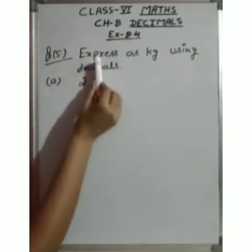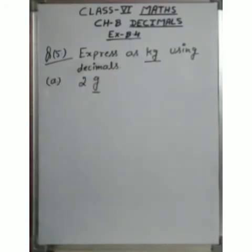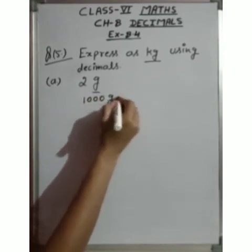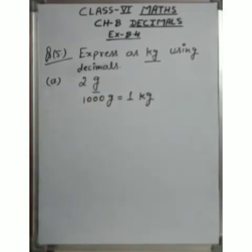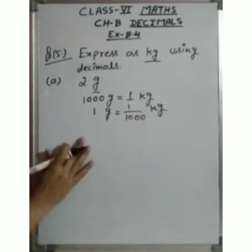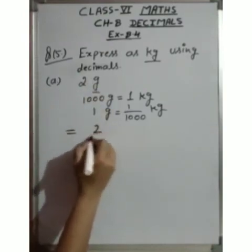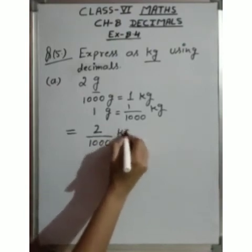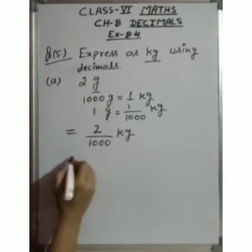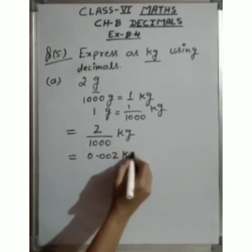Question 5: express as kilograms using decimals. We need to convert grams to kilograms. We know 1000 grams equals 1 kilogram, so 1 gram equals 1 upon 1000 kilogram. To convert grams to kilograms, we divide by 1000. For 2 grams: 2 upon 1000 = 0.002 kilograms — the decimal point comes 3 places from the right. This is our answer.